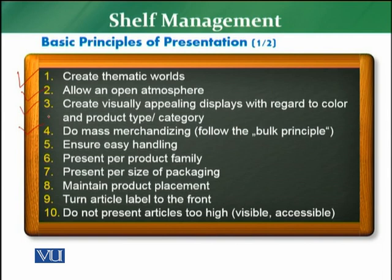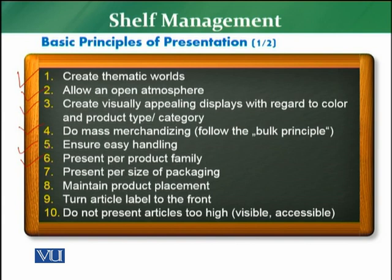The fourth principle is about mass merchandising — products must be displayed in bulk and in large quantities, as this gives more attraction to the customer. The fifth principle is to ensure easy handling; products should be easily handled by the customer. The sixth principle is products should be presented per product family, and the seventh is presentation as per the size of packaging — for example, the smallest size at the top and the largest at the bottom.